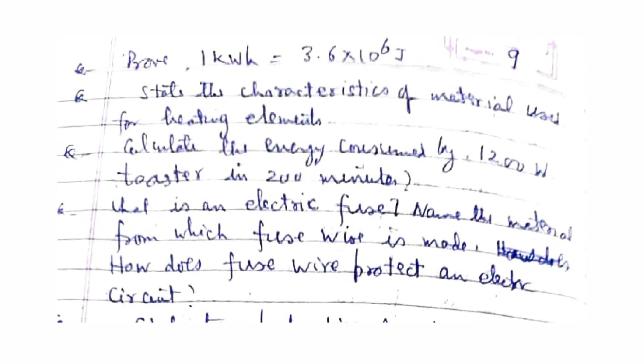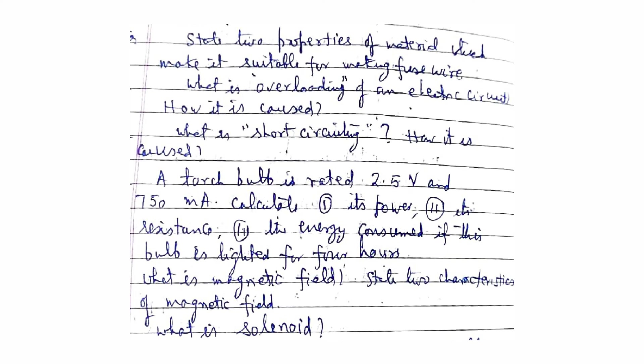Calculate the energy consumed by a 200 watt toaster in 200 minutes. What is an electric fuse? Name the material from which a fuse wire is made. How does a fuse wire protect an electric circuit? State the property of the material that makes it suitable for making a fuse wire. What is overloading of an electric circuit and how does it occur? What is short-circuiting and how does it occur? A torch bulb is rated 2.5 volt and 750 milliampere — calculate its power, its resistance, and the energy consumed if it is lit for four hours.